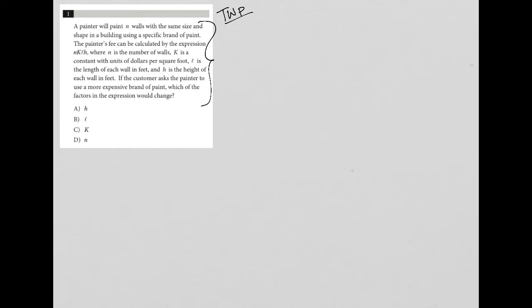We know that N represents the number of walls. That's really all we know from the first sentence. The next sentence says the painter's fee can be calculated by the expression N·K·L·H. So the fee is equal to N·K·L·H, where N is the number of walls.